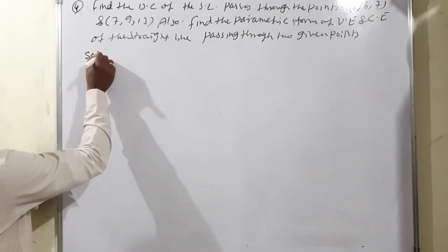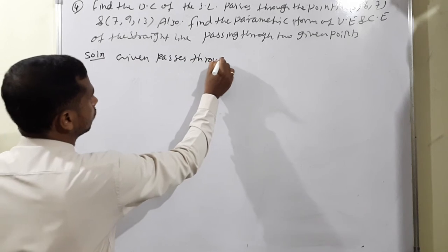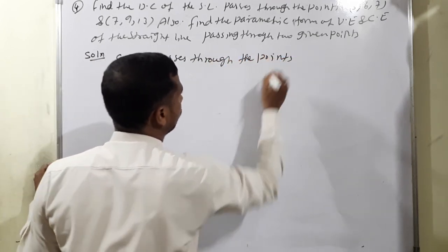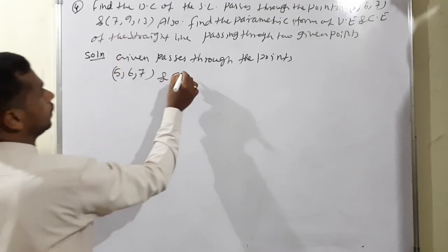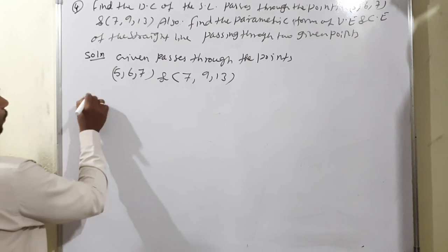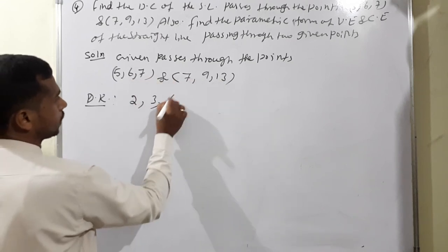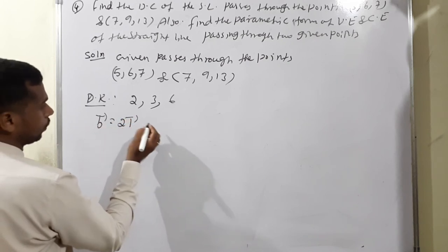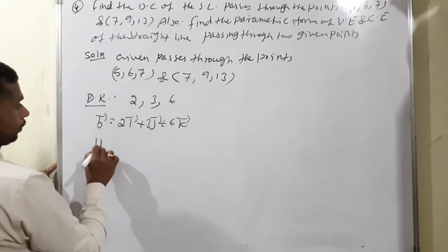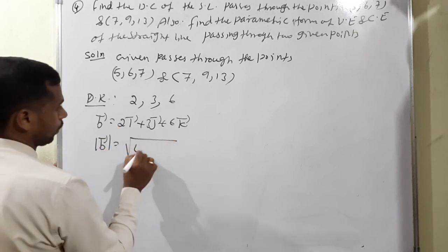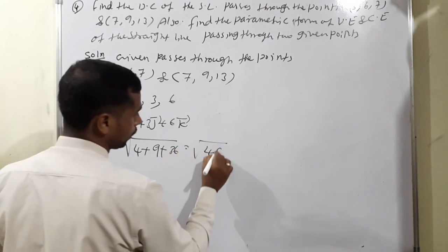Solution. The two given points are (5, 6, 7) and (7, 9, 13). Direction ratio: 7 minus 5 equals 2, 9 minus 6 equals 3, 13 minus 7 equals 6. So b vector equals 2i plus 3j plus 6k. Modulus of b equals square root of 4 plus 9 plus 36 equals square root of 49 equals 7. Therefore, direction cosines are: 2/7, 3/7, 6/7.